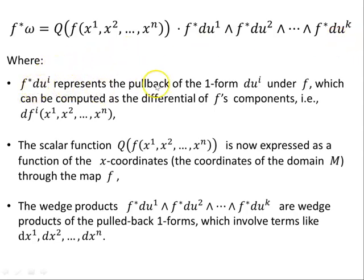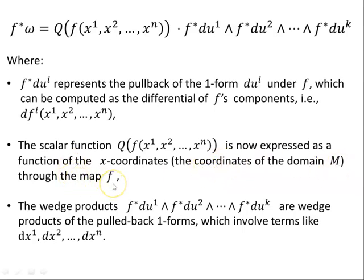F asterisk DUI represents the pullback of the one-form DUI under F, which can be computed as the differential of F's components, i.e., DFI of X1, X2, ..., XN. The scalar function Q of F(X1, X2, ..., XN) is now expressed as a function of the X coordinates — the coordinates of the domain M. Because on N the coordinates were the U's, and on M the coordinates are the X's. So to pull it back, we take the scalar function back by expressing it in terms of the component functions F(X1, X2, ..., XN). It's now expressed as a function of the X coordinates of the domain M through the map F. The wedge products F star DU1 wedge F star DU2 wedge ... wedge F star DUK involve terms like DX1, DX2, ..., DXN.